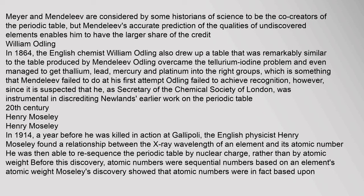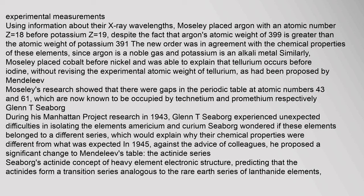In 1914, a year before he was killed in action at Gallipoli, the English physicist Henry Moseley found a relationship between the X-ray wavelength of an element and its atomic number. He was then able to re-sequence the periodic table by nuclear charge rather than by atomic weight. Before this discovery, atomic numbers were sequential numbers based on an element's atomic weight. Moseley placed argon (atomic number Z=18) before potassium (Z=19), despite argon's atomic weight of 39.9 being greater than potassium's 39.1, and the new order agreed with the chemical properties of these elements.